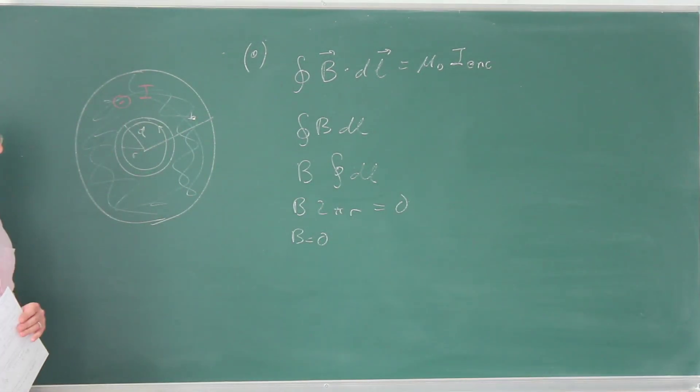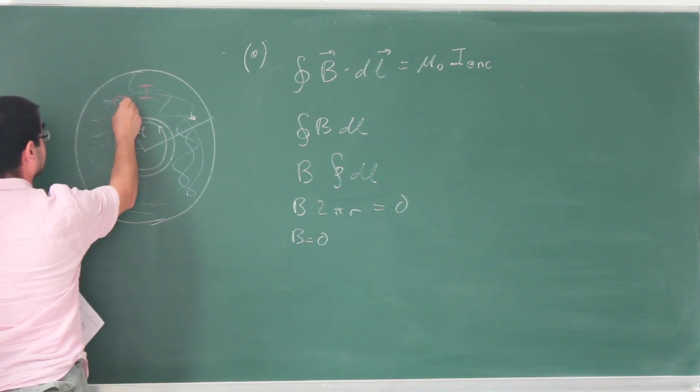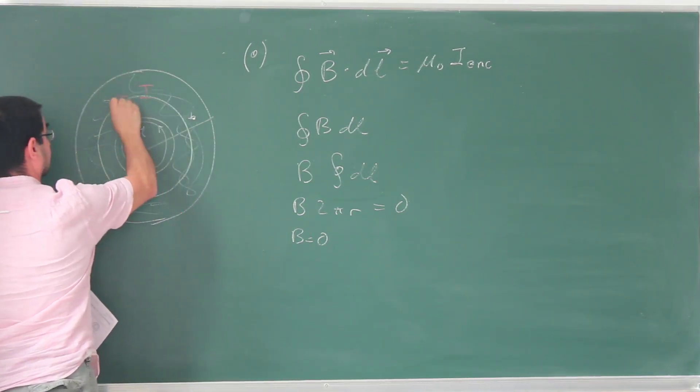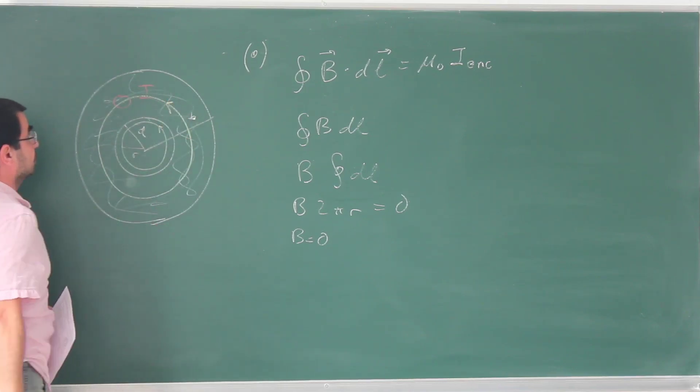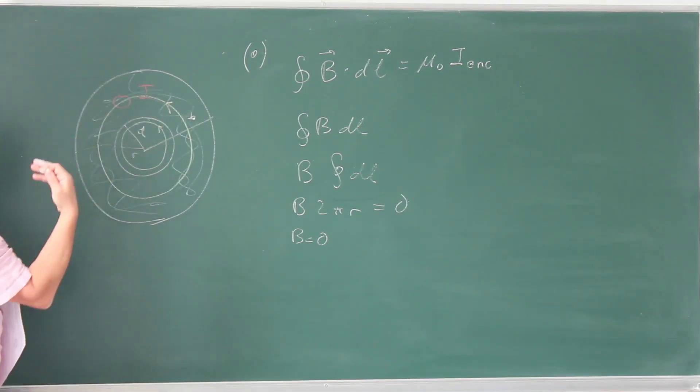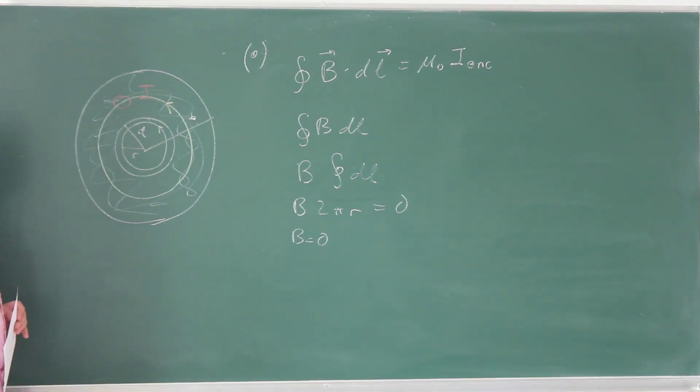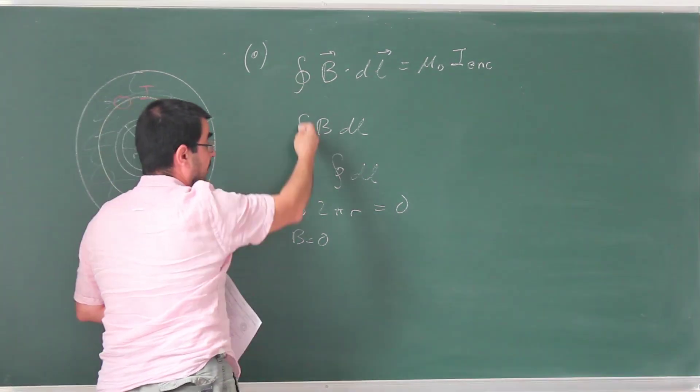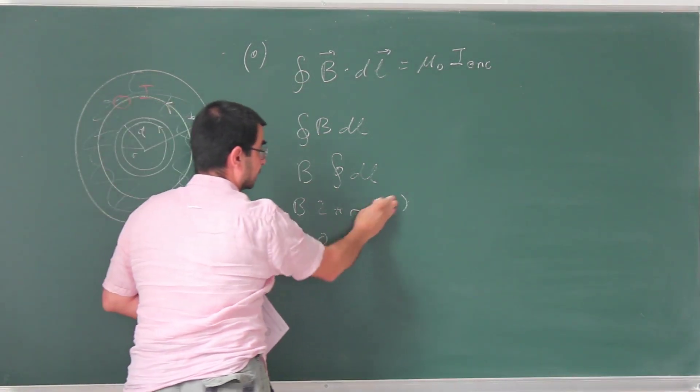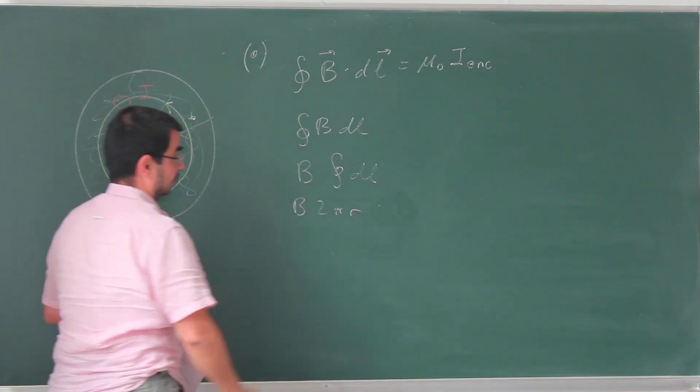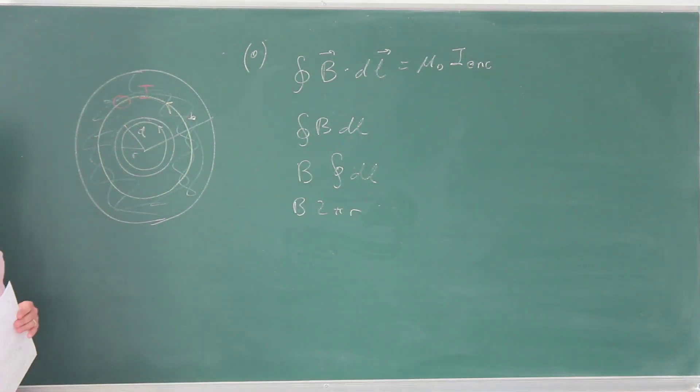Now, for part b, when our r is in between a and b, we proceed exactly the same way, except we draw a bigger Amperian loop, and again, I'm going to choose this in such a way that the current passing through this loop is going to make a positive contribution.